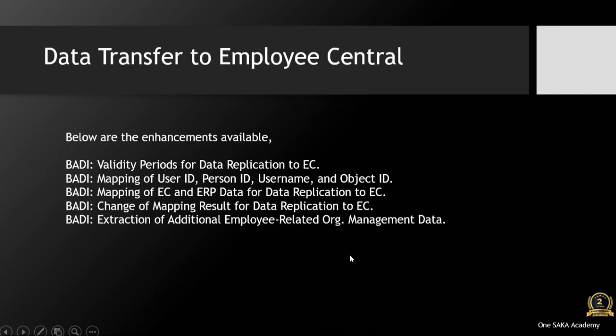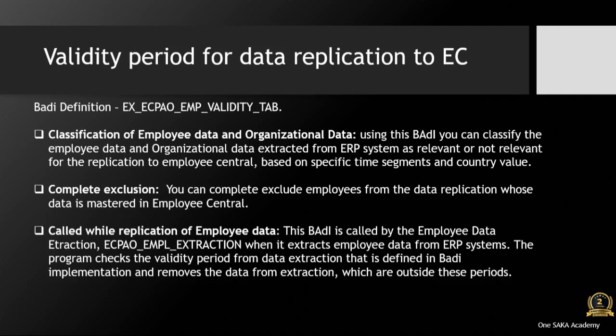Data transfer to Employee Central — below are the enhancements available. BAdI validity periods for data replication to EC. BAdI mapping of user ID, person ID, username, and object ID. BAdI mapping of EC and ERP data for data replication to EC. BAdI change of mapping result for data replication to EC. BAdI extraction of additional employee-related org management data. Using this BAdI, you can classify the employee data and organizational data extracted from the ERP system as relevant or not relevant for the replication to Employee Central.